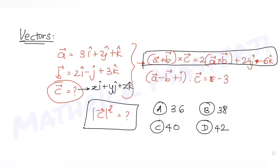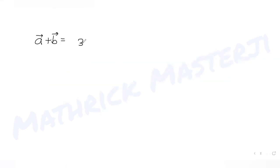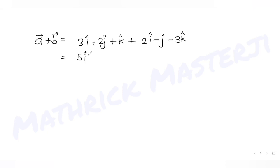First, let's compute a + b. We have (3i + 2j + k) + (2i − j + 3k), which gives us 5i + j + 4k.